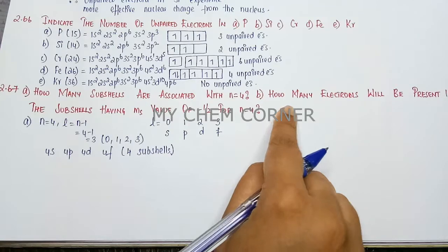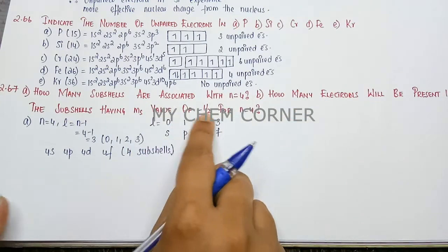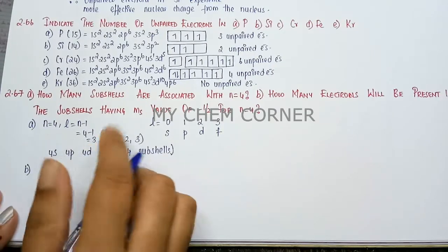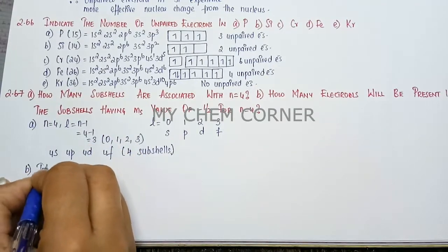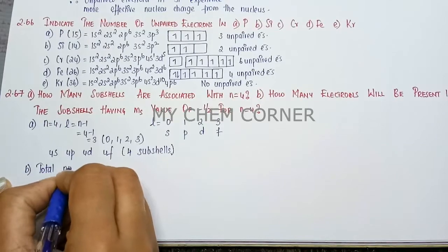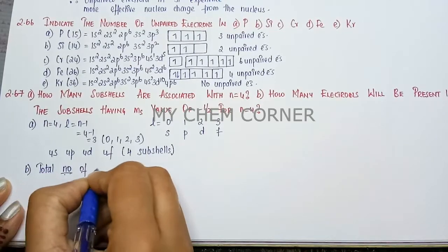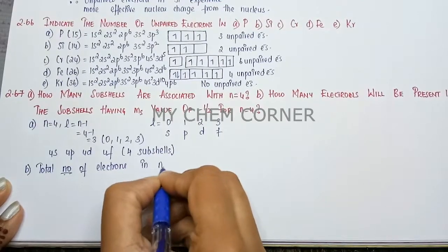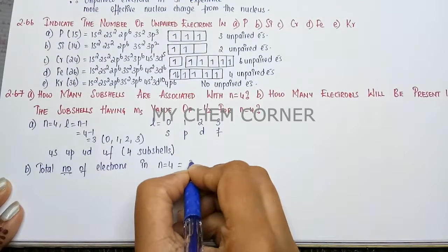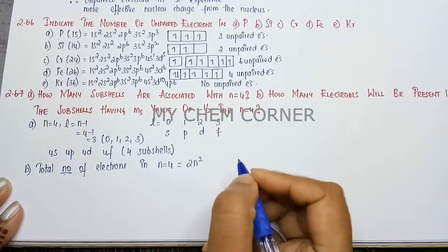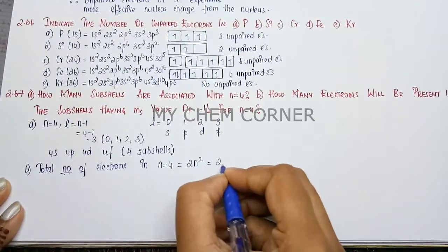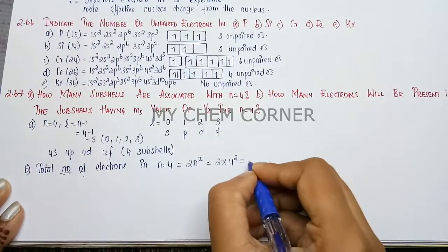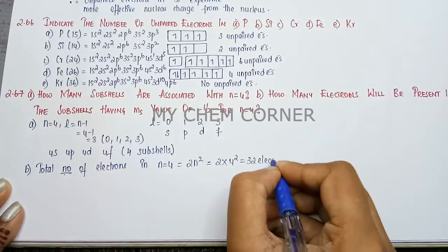Now the second question is how many electrons will be present with minus half value for the same quantum state. So here we can do by a formula method. Total number of electrons in n is equal to 4 is, formula is 2n square. So that is 2 into n value is 4, so 4 square. 4 square is 16 into 2, 32 electrons.